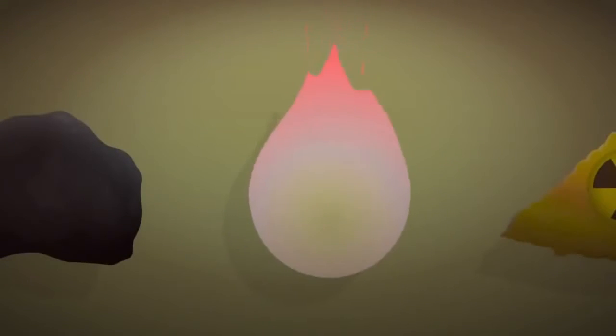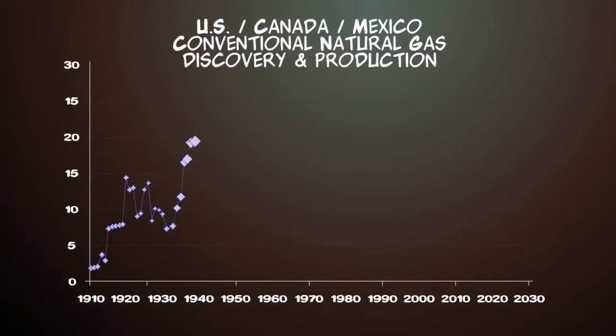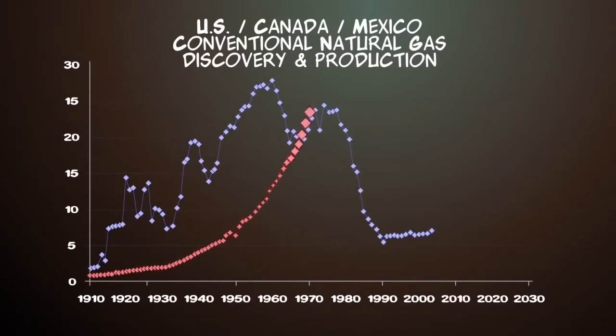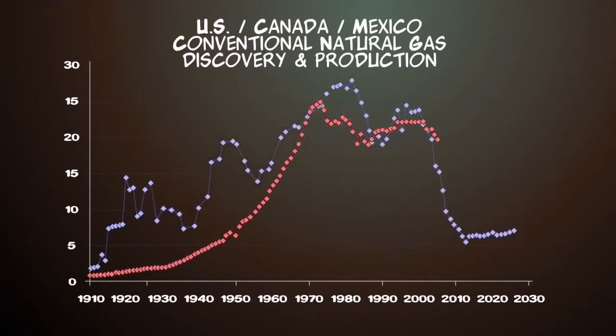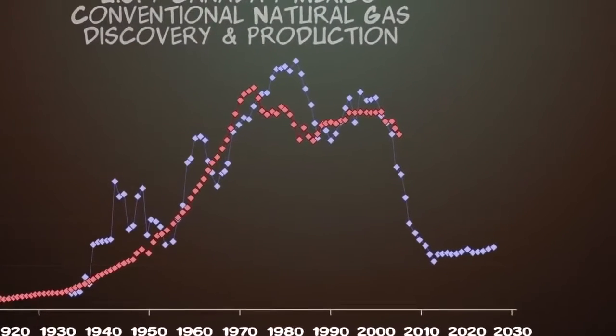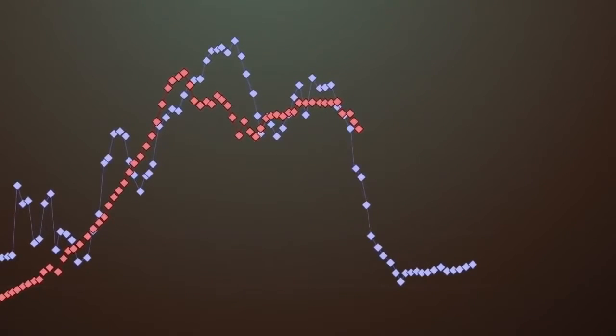Natural gas is often found alongside oil and coal. North American discovery of conventional gas peaked in the 1950s and production peaked in the early 70s. If the discovery graph is moved forward by 23 years, the possible future of North American conventional natural gas production is revealed.